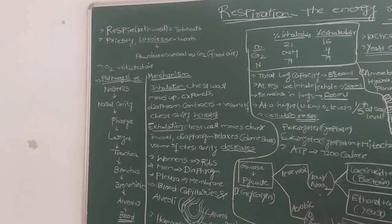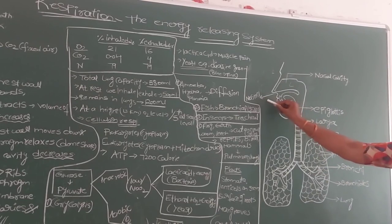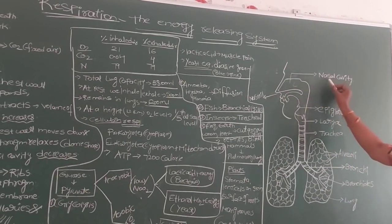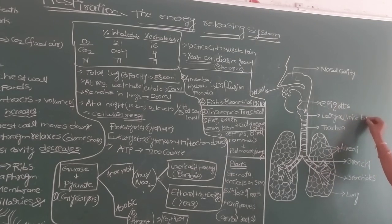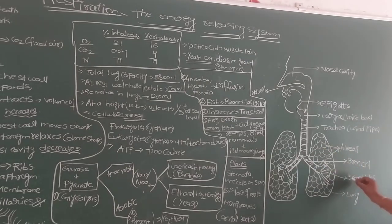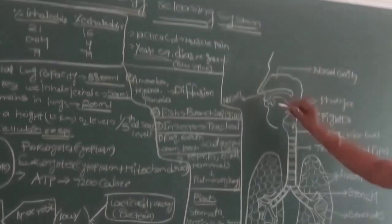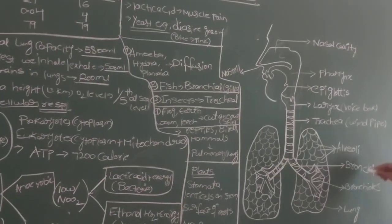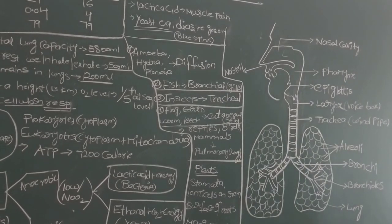Before discussing the pathway of air, let's look at the human respiratory system. It starts with the nostrils and nasal cavity, followed by pharynx, larynx (also known as voice box), and trachea (also known as windpipe). Then come the lungs, with bronchi, bronchioles, and finally the small air chambers called alveoli.